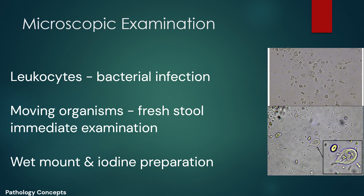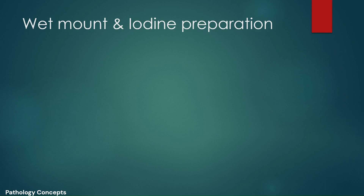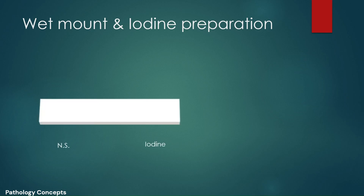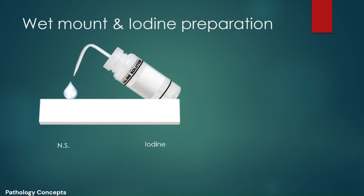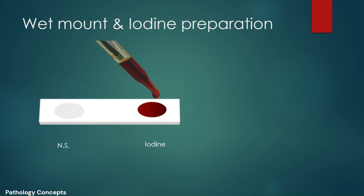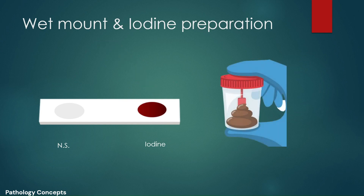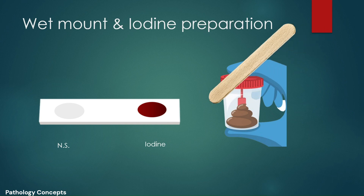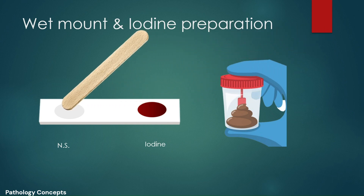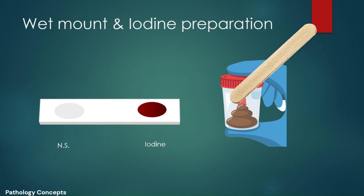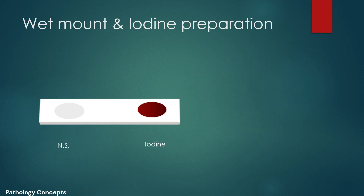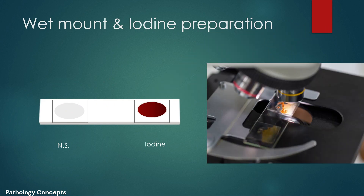Routine methods are wet mount preparation and iodine preparation for microscopic examination. To prepare: take a slide, put one drop of normal saline on one side and one drop of iodine on the other side. Add a stool sample with a wooden stick on each circle, mix it properly, place the cover slip, and observe under the microscope.